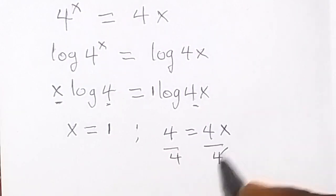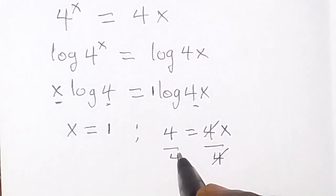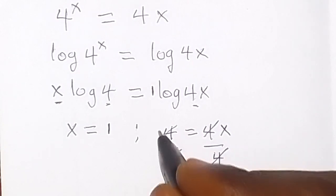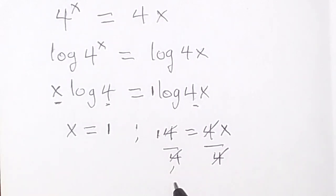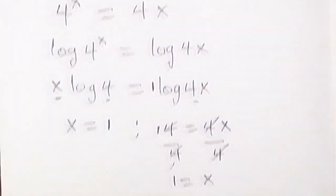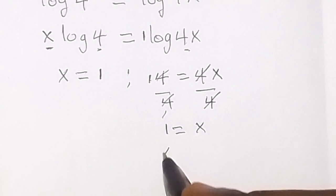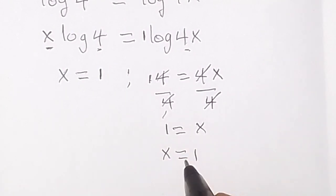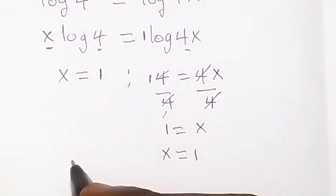And 4 cancel 4 here. Also 4 here, making 1 on this side as well. So you can say 1 equals x, which we can write as x equals to 1 as well. So we can see that x equals to 1.